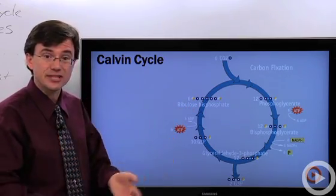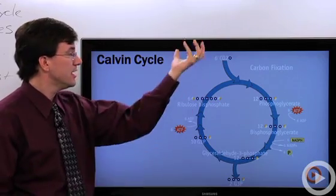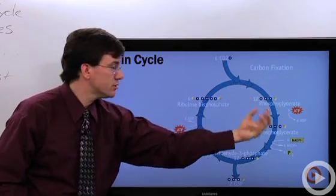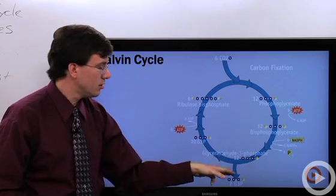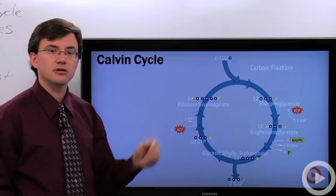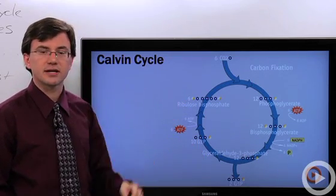So this is it. This is the Calvin cycle of light independent reactions. It takes carbon dioxide, adds it to RuBP, turns it into a series of different chemicals, and ultimately allows you to pull out a few of those in order to make the glucose. And then you spend a little bit more energy to recycle back to the beginning.